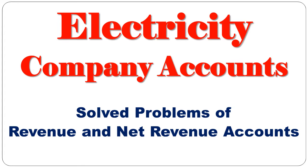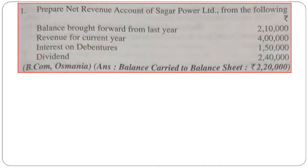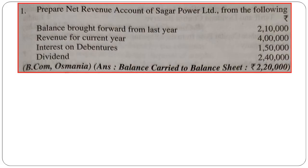Let's start. I'll take the first question: prepare the net revenue account of Sager Power Limited from the following information — balance brought forward from last year (that is the balance of net revenue account, i.e., balance brought down), revenue for current year which will be carried forward to net revenue account, interest on debentures, and dividend. Bear in mind: interest on debentures and interest on any investment — these two items will be taken in net revenue account, not in revenue account.